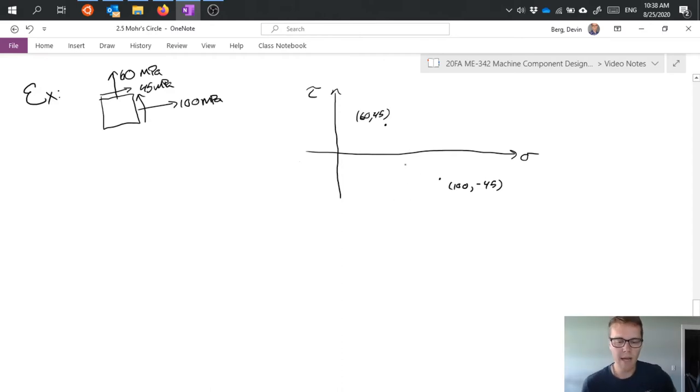So I can put that dot somewhere down here and I'm going to label this point 100 minus 45. So now I can actually just draw my circle from this. My Mohr circle would look something like this. It passes through those two points.